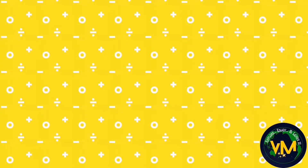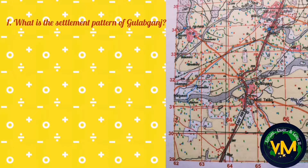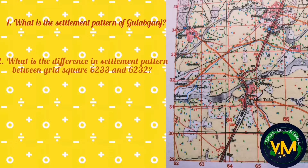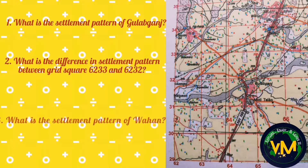Come on, let's do some exercises. Find out the answer for: what is the settlement pattern of Gulab Ganj? What is the difference in settlement pattern in grid square 6233 and grid square 6232? Third question: what is the settlement pattern of Vahan?